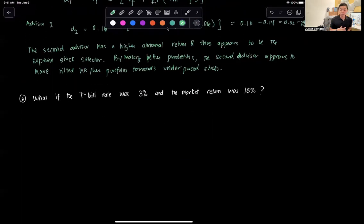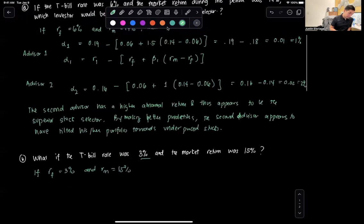In the second question, we basically revise the risk-free rate and the market return. In this case, the risk-free rate is now 3%, so if RF is 3%, and the market return was 15%, so we recompute using the same structure.